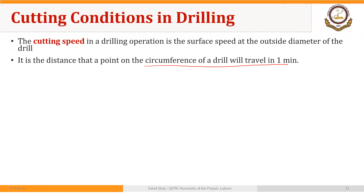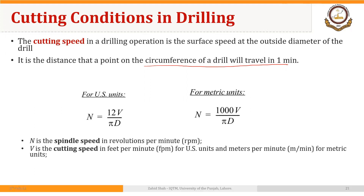The cutting speed is defined with respect to the distance that a point moves on the circumference of a drill in one minute. The formula to calculate RPM in the case of drilling is the same as it was in the case of turning. The only difference is that D is actually the diameter of the twist drill, whereas in the case of turning, D is the diameter of the blank or the workpiece.